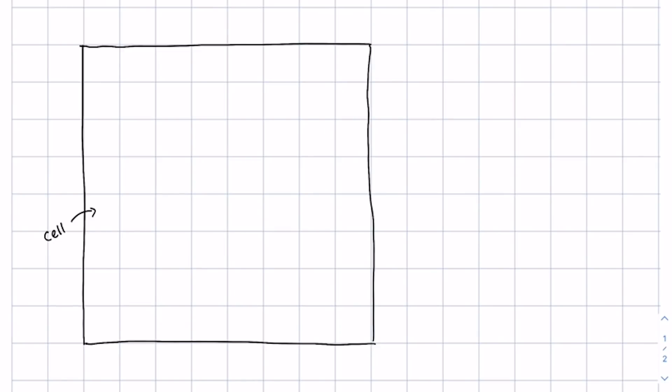Let's start by understanding cellular automata. Cellular automata are computer programs designed to automatically iterate through the evolution of a structure according to an update rule. Cellular automata begin as a grid of cells where each cell can be in one of several states — for example, alive or dead. For each step that we take in time, a new generation of cells is created based on a predefined update rule that takes into account the current state of each cell and the cells around it.